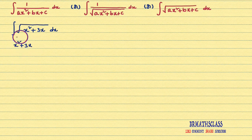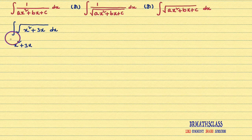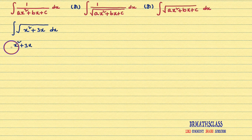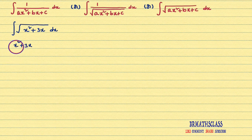This expression is in the form of ax² + bx + c only. After considering the expression ax² + bx + c, you check the x² coefficient. If x² coefficient is 1, okay. If x² coefficient is not 1, we will make it 1 by taking that number common. In this problem, x² coefficient is 1 only, so nothing to worry.